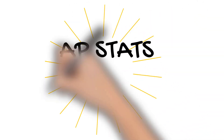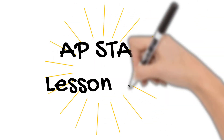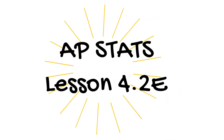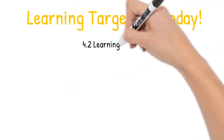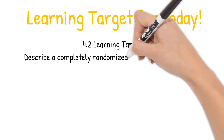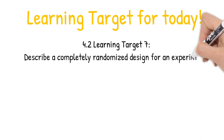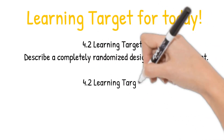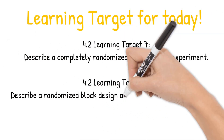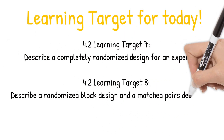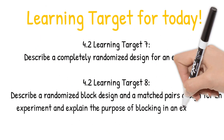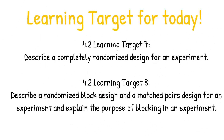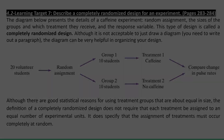Hi, this is Mrs. Marita. Welcome to AP Stats Lesson 4.2e. Today we have two learning targets, seven and eight: describe a completely randomized design for an experiment, and describe a randomized block design and a matched pairs design for an experiment, explaining the purpose of blocking in an experiment.